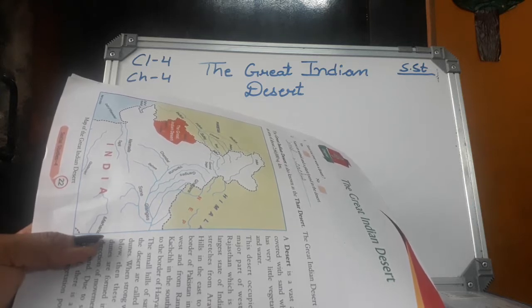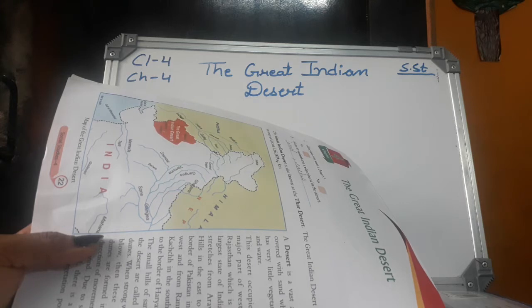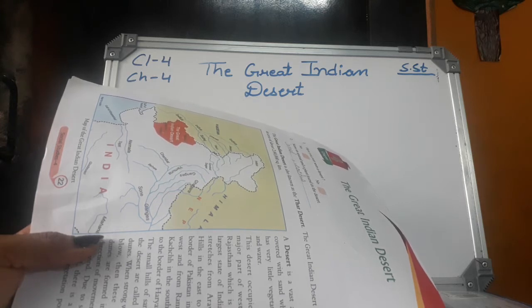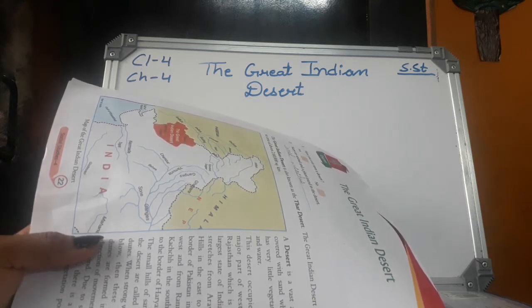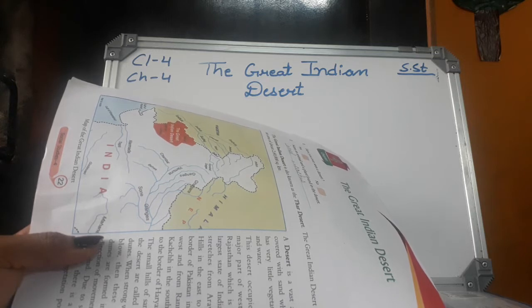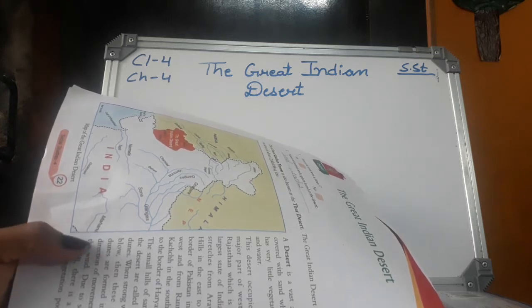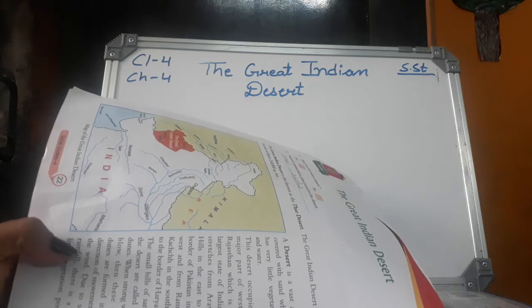The small hills of sand in the desert are called sand dunes. When strong winds blow, these sand dunes are formed in the direction of movement of the wind.